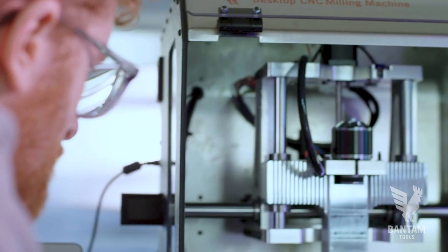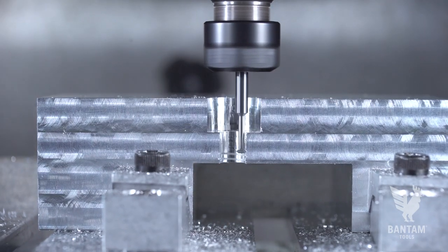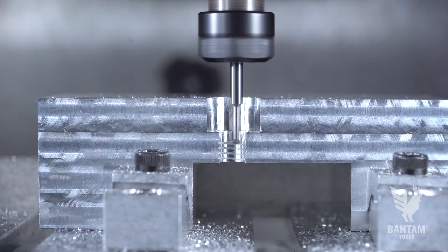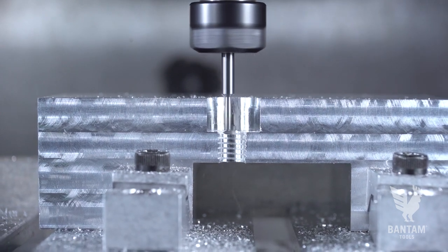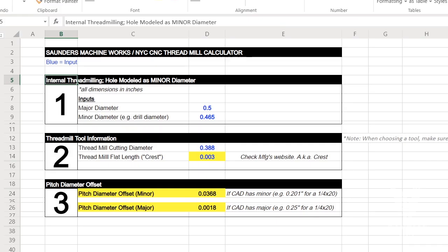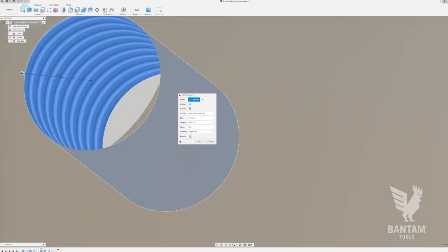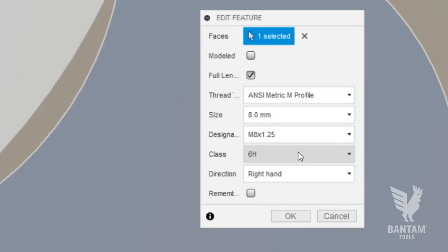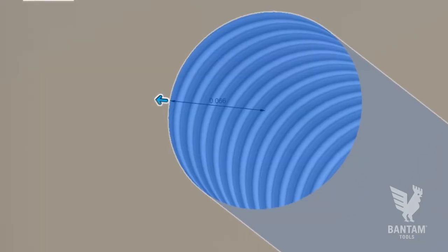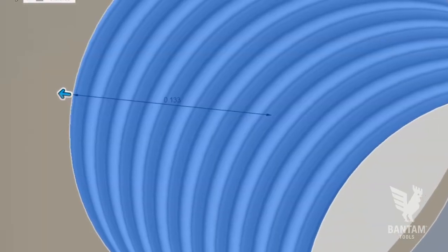So here are the cliff notes to thread milling using the NYC CNC spreadsheet. Download the thread milling calculator from NYC CNC. On the second tab, there's a simple calculator for internal threads. Model your hole in Fusion and add the threads to the model using the thread tool and select the appropriate size. Fusion will then model the hole according to the minor diameter.